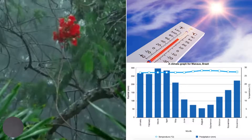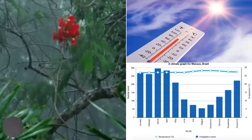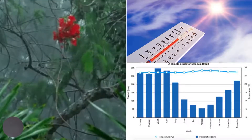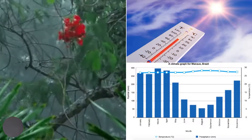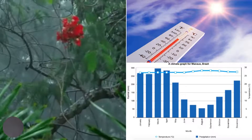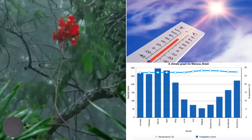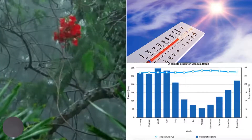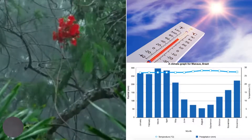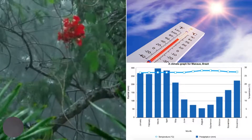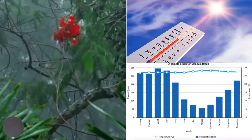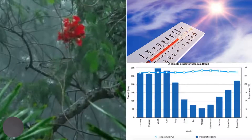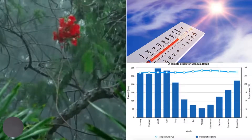The climate graph also shows that temperature is high throughout the year. This is due to its proximity to the equator. The average monthly temperature is about 26 to 28 degrees Celsius. The annual temperature range is very small — about 3 degrees Celsius. In terms of the diurnal temperature range, it seldom exceeds 10 degrees Celsius, and this is due to the thick cloud cover which reduces the temperature in the area.